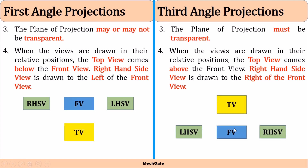In third angle projection, you again draw the front view first, but the top view is drawn above the front view. The right-hand side view is drawn on the right side of the front view, and the left-hand side view is drawn on the left side of the front view. The right-hand side view is what we see when observing the object from the right-hand side, and the left-hand side view is what we see when observing from the left-hand side.